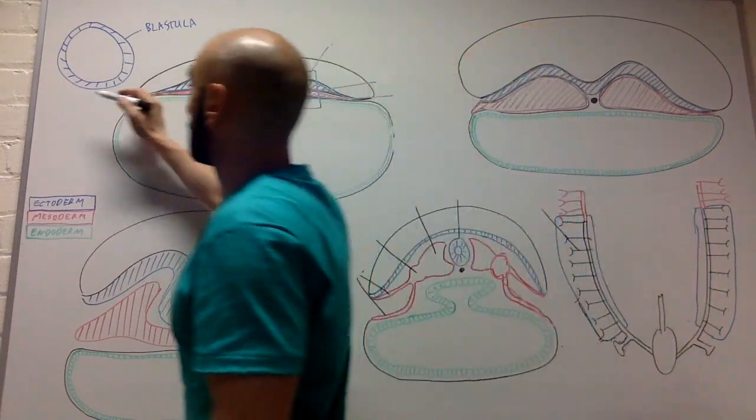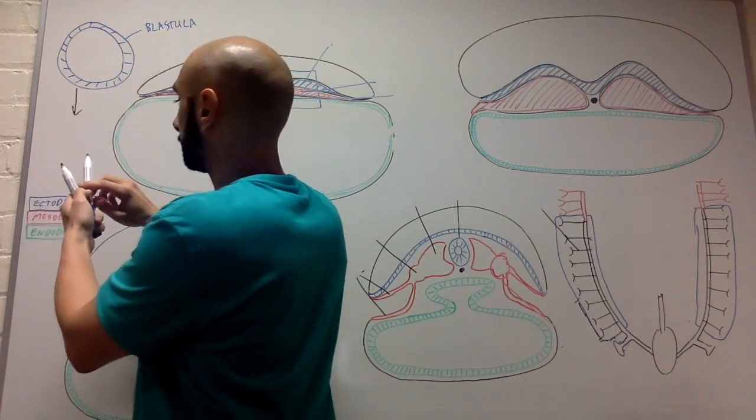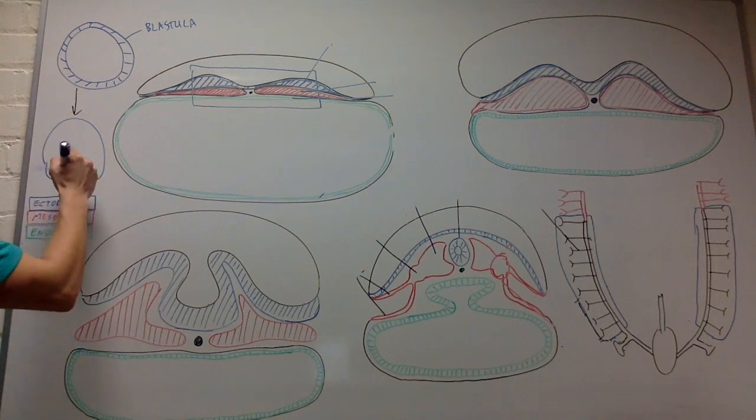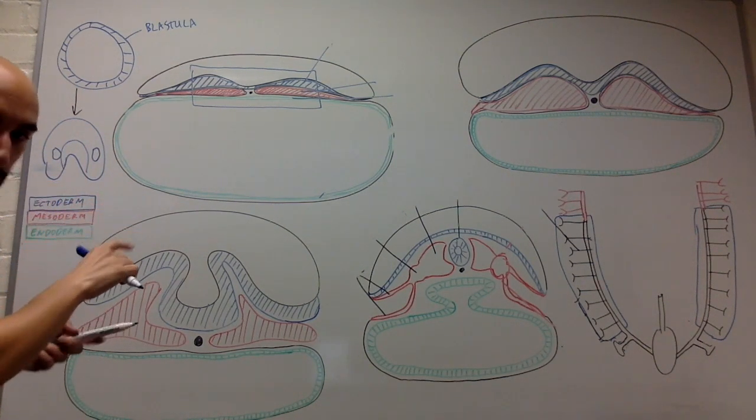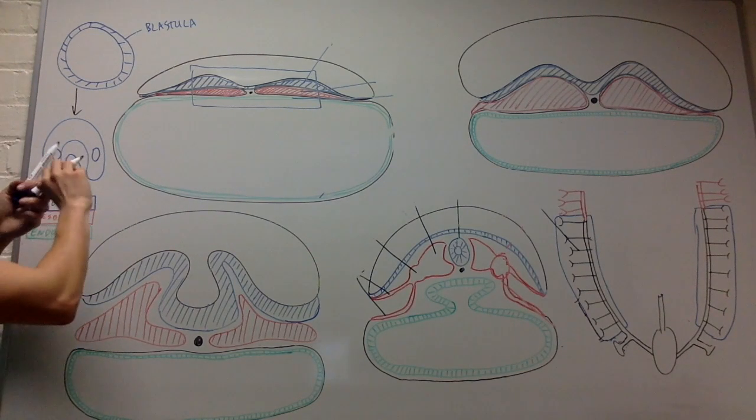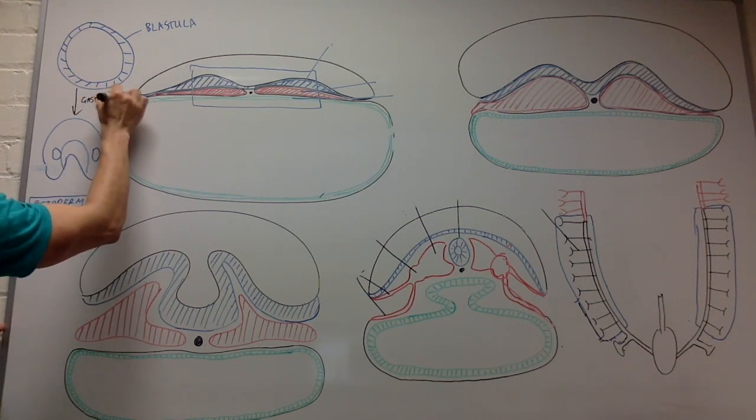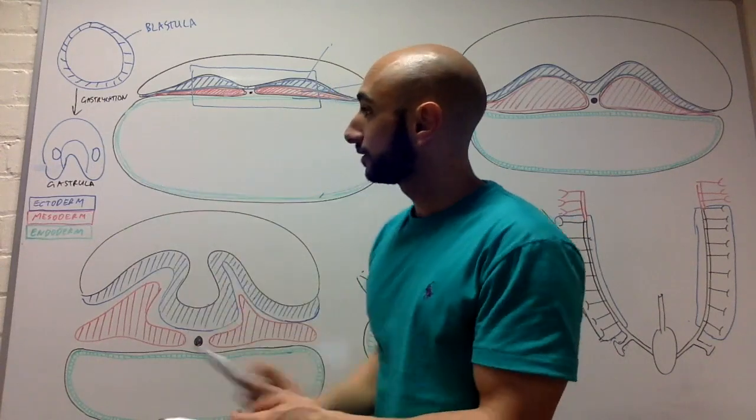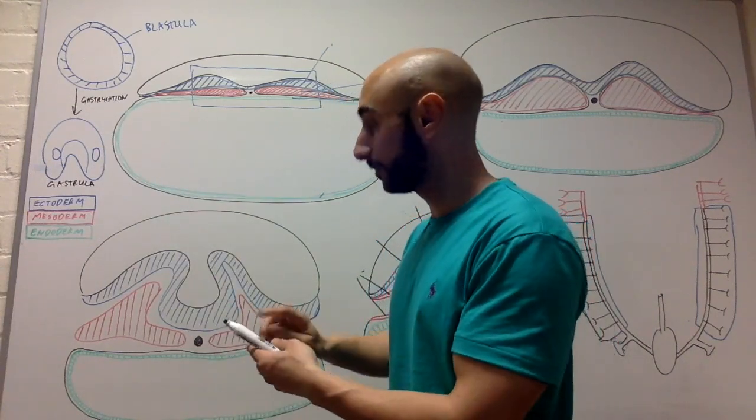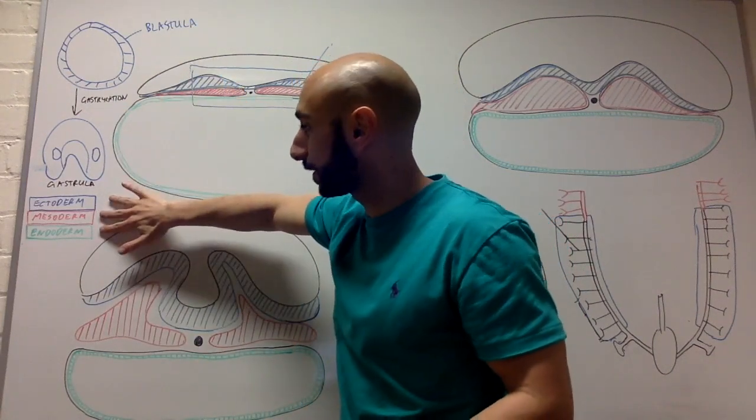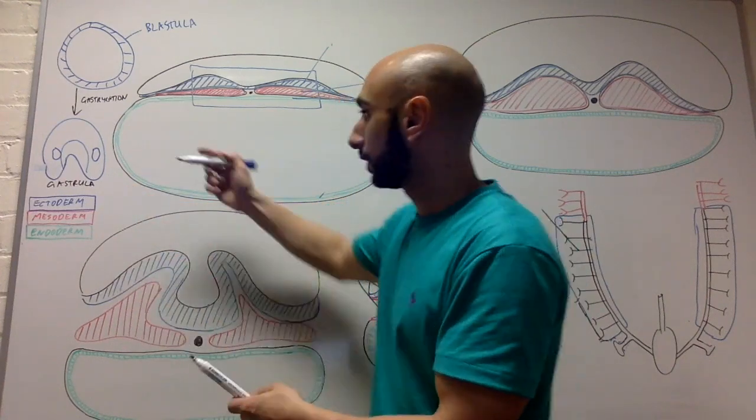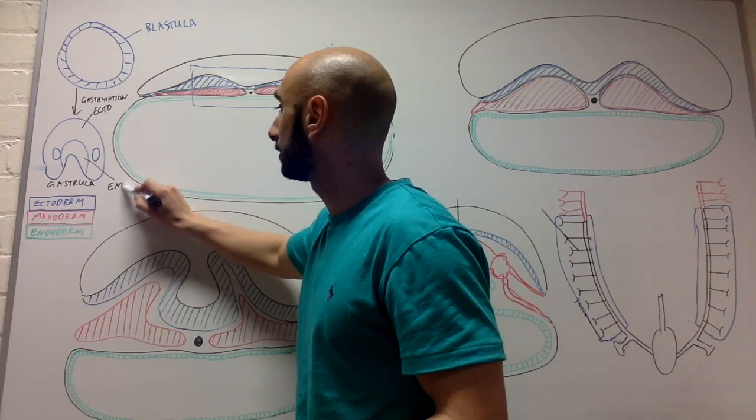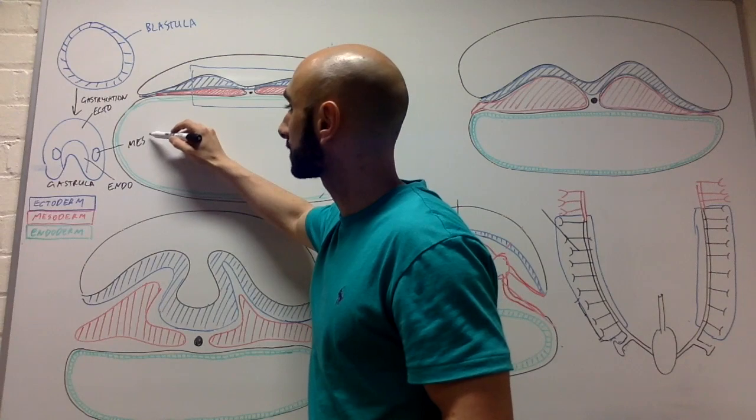What's the next step after the blastula? A process called gastrulation turns the blastula into something like this. And don't let that scare you. Through the process of gastrulation, we get a gastrula. And essentially, the gastrula is made up of the ectoderm, the mesoderm, and the endoderm. The process of gastrulation gives us these three layers we are so exposed to.